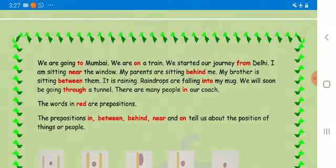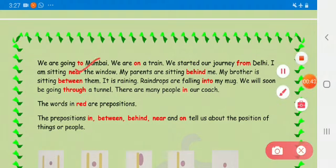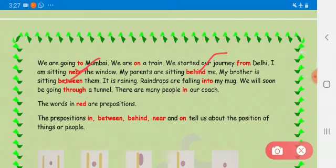We are going to Mumbai. We are on a train. We started our journey from Delhi. I am sitting near the window. My parents are sitting behind me. My brother is sitting between them. It is raining. Raindrops are falling into my mug. We'll soon be going through a tunnel. There are many people in our coach.